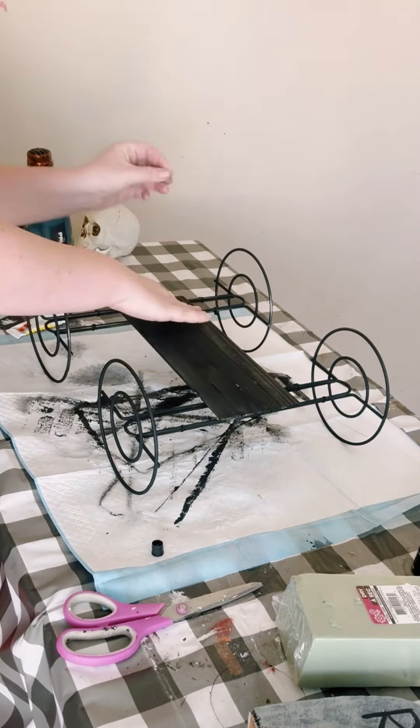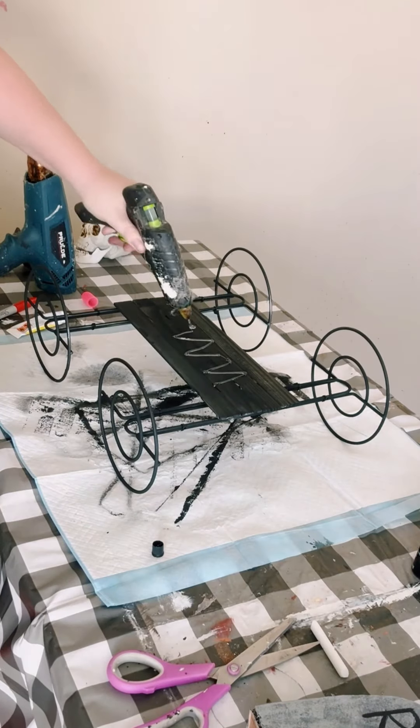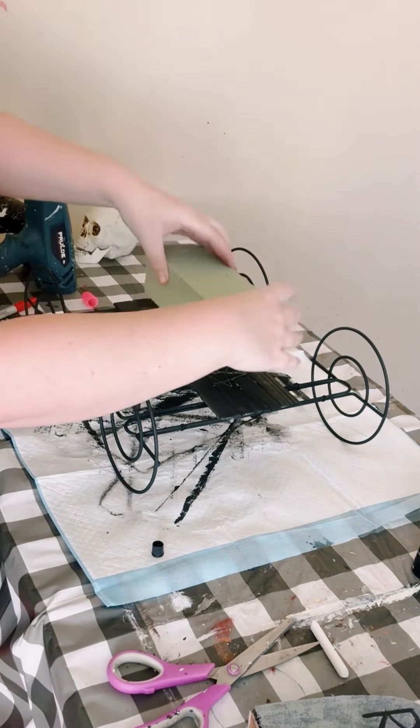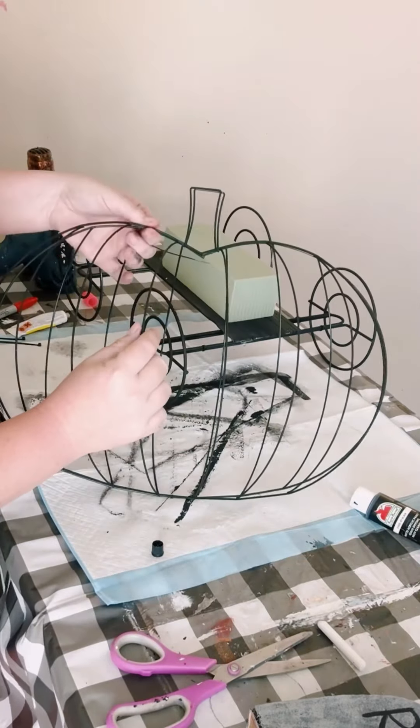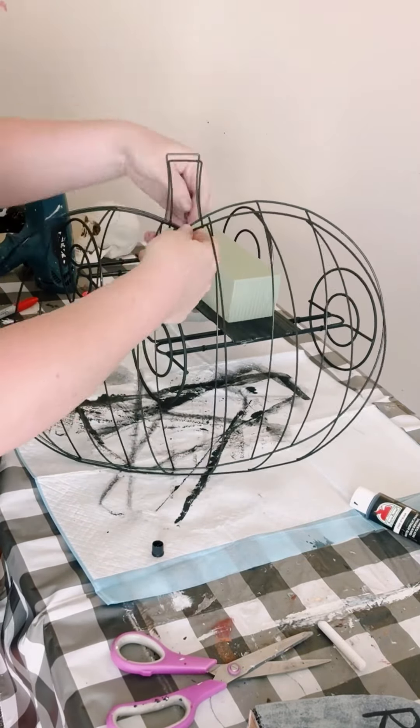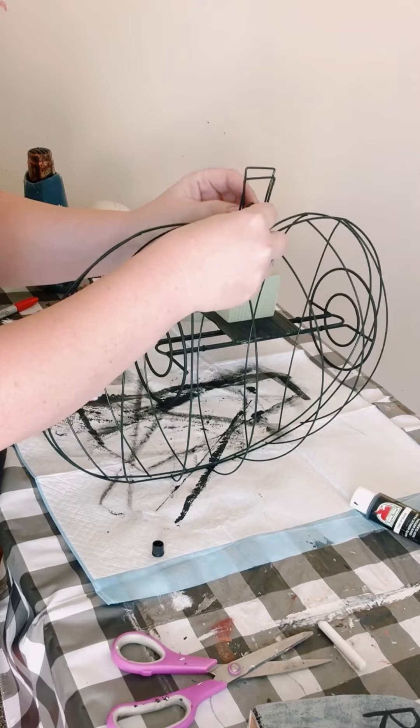You then want to take some floral foam from Dollar Tree and glue that on top of your wooden sign. Then grab your pumpkin wreaths and I just zip tied them together on the top part only.